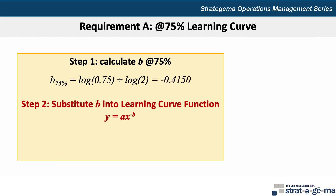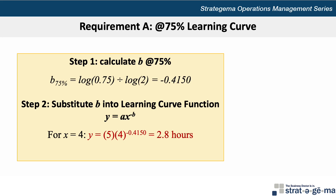For step 2, we substitute b into the learning curve function y equals ax exponent negative b. Notice that the exponent is negative b, and that's because the logarithm calculation for b resulted in a negative number. When substituting, we want to be careful not to substitute that as a double negative. For x equals 4, or the fourth installation, y equals the 5-hour installation time multiplied by 4 to the exponent of negative 0.4150, which equals 2.8 hours rounded.